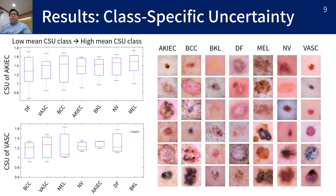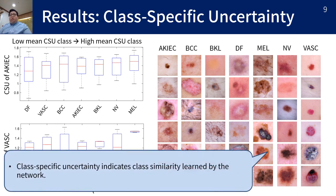To check whether the class-specific uncertainty represents class similarity, we observe the distribution of class-specific uncertainty for a specific class and example images for each class. DF and AKIEC with low class-specific uncertainty show similar image characteristics, as seen in the right images, whereas melanoma and AKIEC with the highest class-specific uncertainty show distinct differences. We can confirm that the class-specific uncertainty indicates class similarity learned by the network.